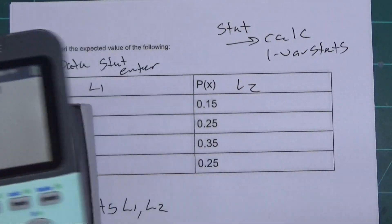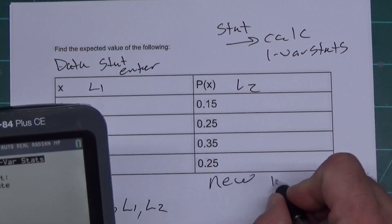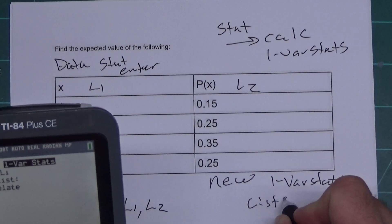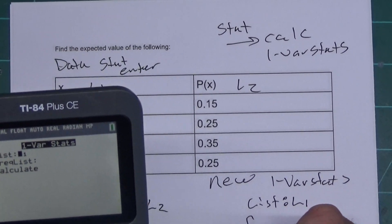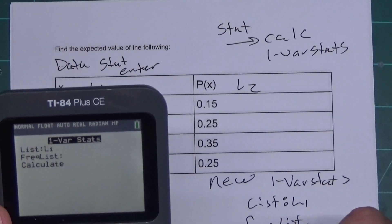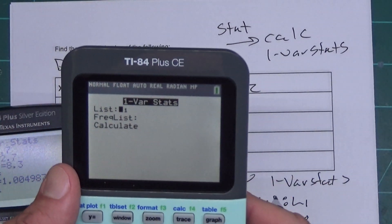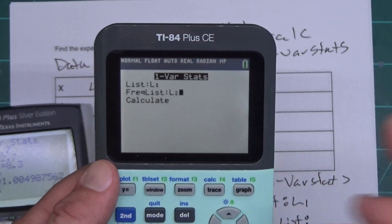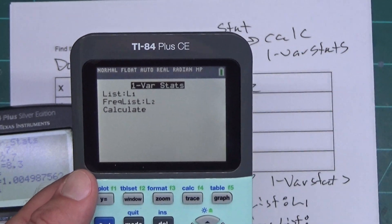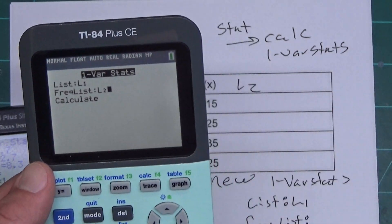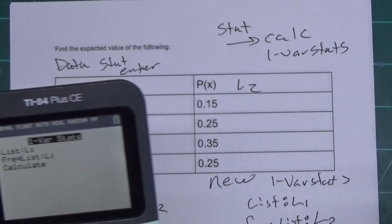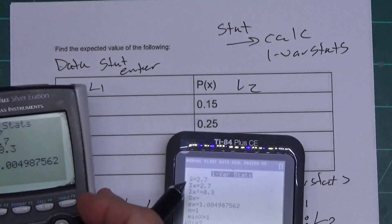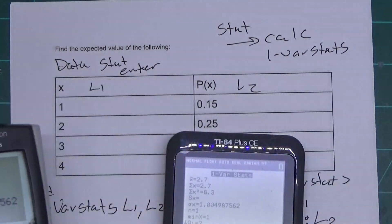Over here, on the new one, it says 1-Var Stats at the top. It says List, and it defaults to L1. This should always say L1. But the frequency list won't say anything. When the calculator gets reset, that gets cleared. So, what you're going to have to do is come down here and put 2nd, 2. On the TI-30s and 36s, it has a menu list and you just pick out the one you want. Here, it doesn't. So, you hit 2nd, 2. So, you put L2 there, which is 2nd, 2. And then you hit Calculate. And if you caught it real quickly, it flashes what this one had on the screen for a moment.